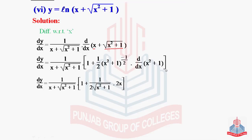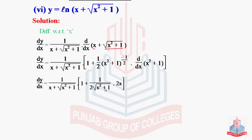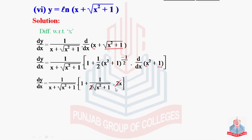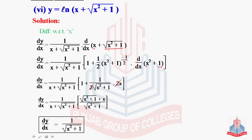This gives 1/(x + √(x² + 1)) times [1 + x/√(x² + 1)], since (x² + 1)^(-1/2) moves to denominator as √(x² + 1), derivative of (x² + 1) is 2x, and the 2 cancels. Taking LCM √(x² + 1) in the bracket gives (√(x² + 1) + x)/√(x² + 1). The factor (x + √(x² + 1)) cancels, leaving 1/√(x² + 1) as the required result.